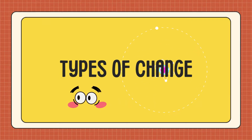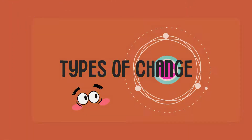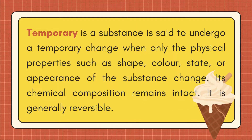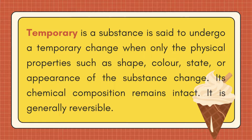The types of change: temporary and permanent change. A substance is said to undergo a temporary change when only the physical properties — such as shape, color, state, or appearance — of the substance change. Its chemical composition remains intact.